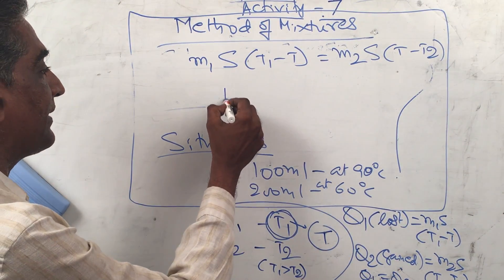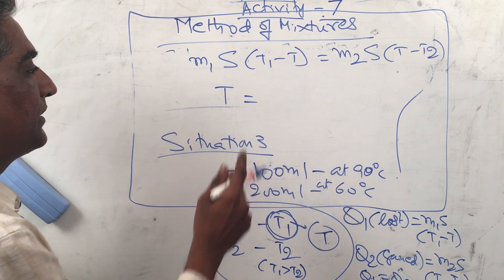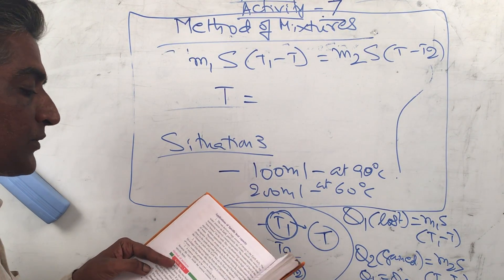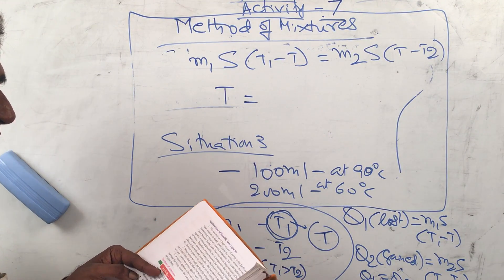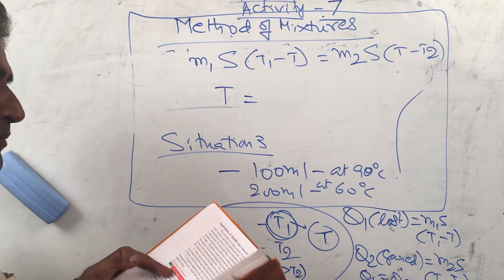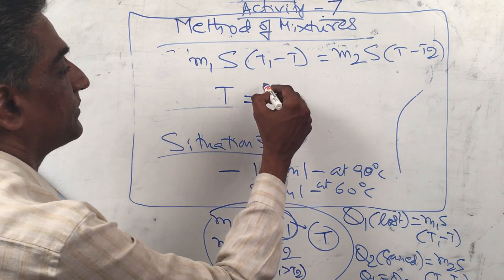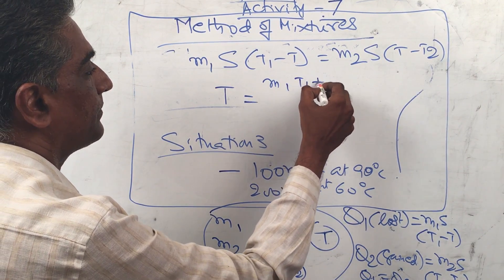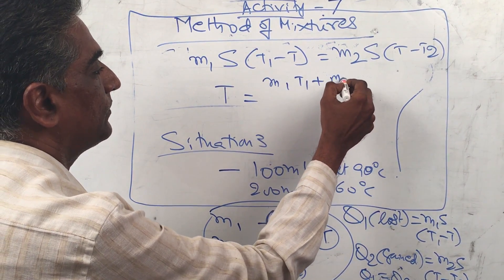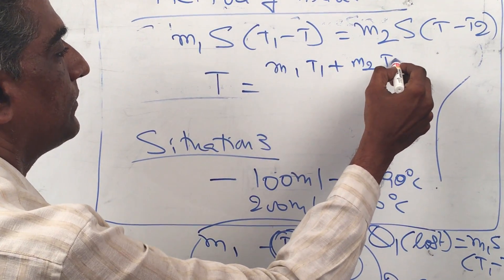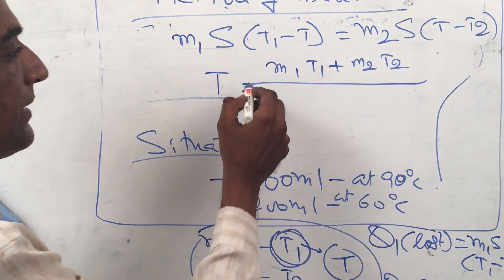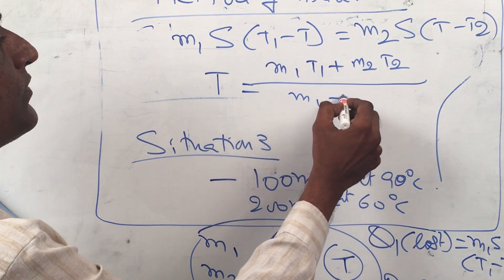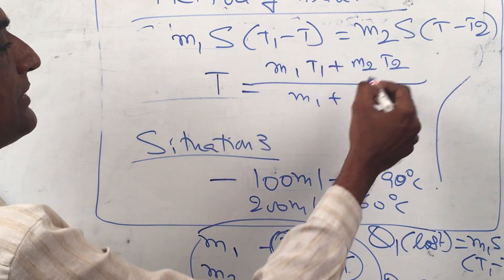When you simplify that equation, the final temperature T comes out to: T = (m1·T1 + m2·T2) / (m1 + m2). This is straightforward algebra.